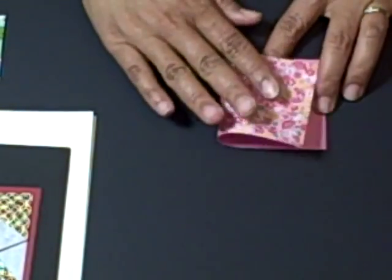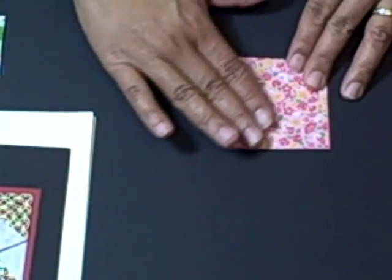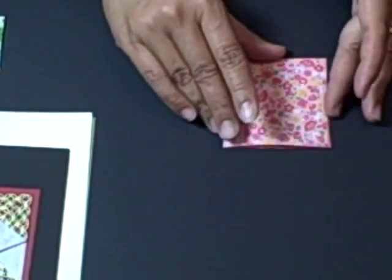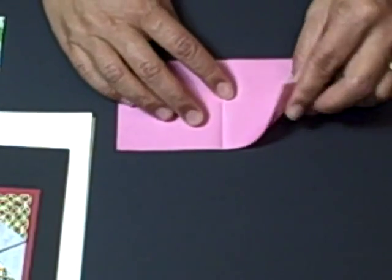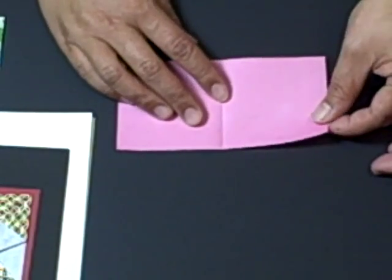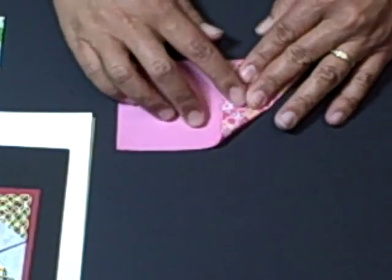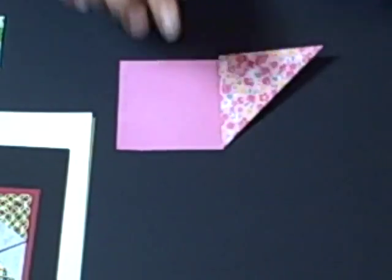Go ahead and fold it in half, create a crease in the center, and then take one side and fold it down into a triangle.